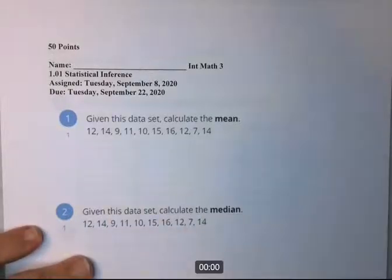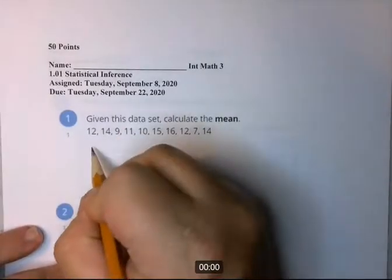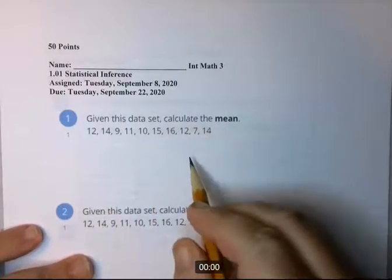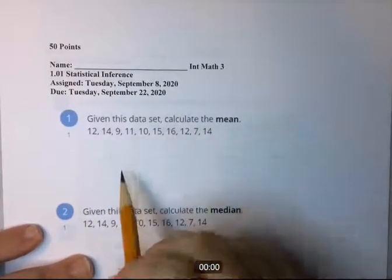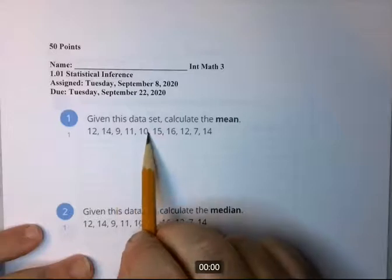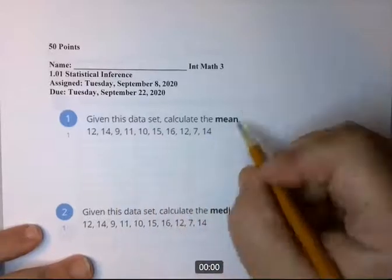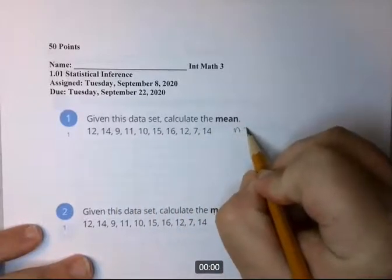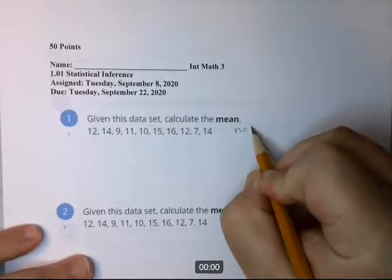So what you need to do for a mean, you don't need to put the numbers in order. In this case we won't. We're just going to go ahead and add up all the numbers and divide by how many numbers we have. So we have 1, 2, 3, 4, 5, 6, 7, 8, 9, 10. So n represents the number of values and that's 10.